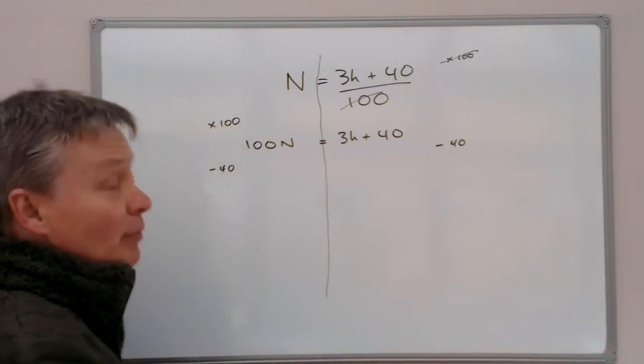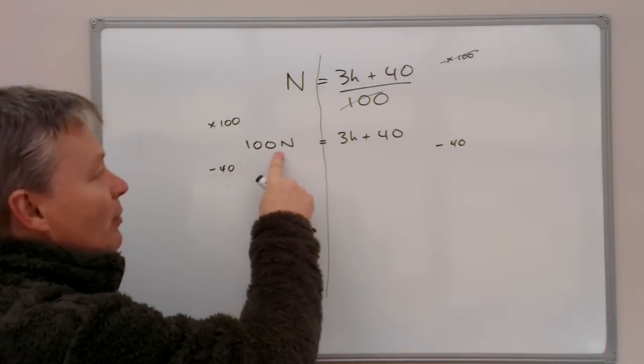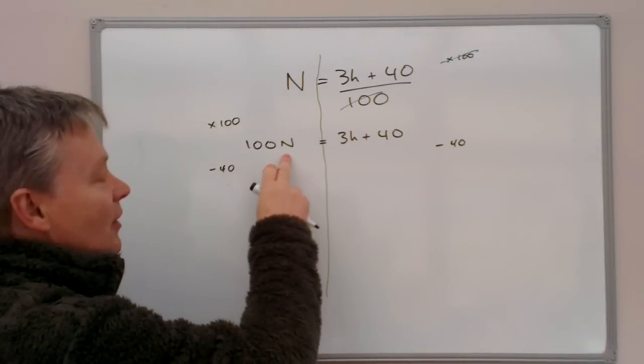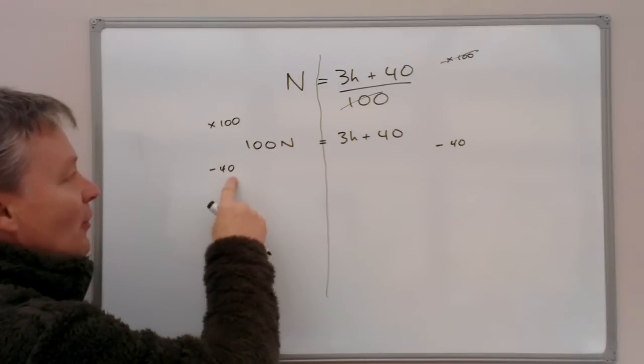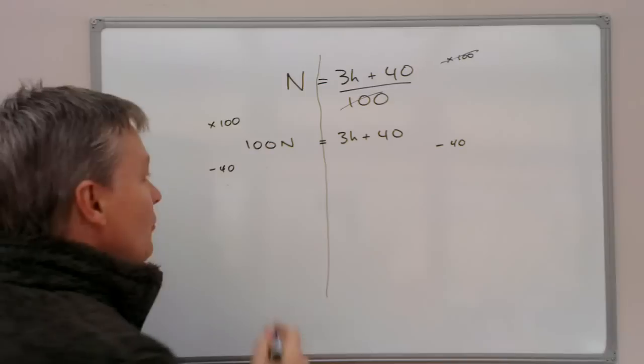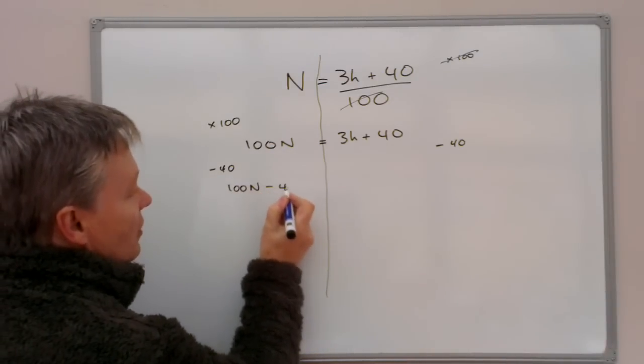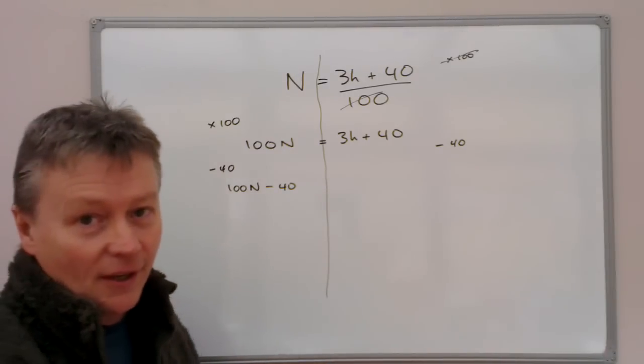Because N could be anything. It could be 30, in which case that would be 30,000. Or it could be 2, in which case that would be 200. So it wouldn't be correct to say that it would be 100 take away 40N. It would be 100N minus 40. You need to remember that they are separate terms entirely.